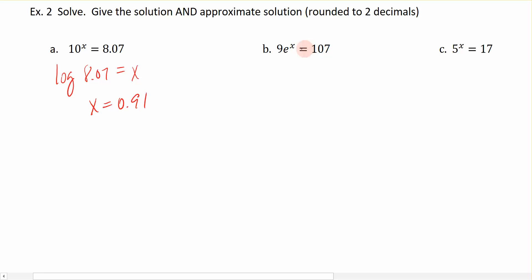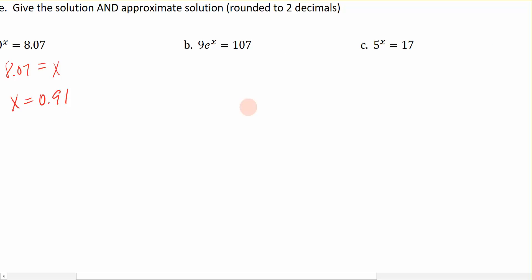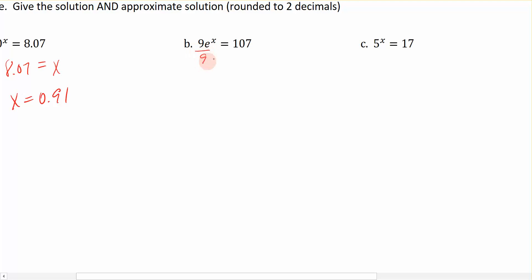Let's try that again. We have this equation here which says 9e^x equals 107. My variable x is in the exponential position, and I want to isolate the base along with the variable. So I'm going to do that by dividing both sides by 9. That leaves me with e^x equals 107 divided by 9. I'm going to leave it as the fraction and not do it on my calculator just yet.